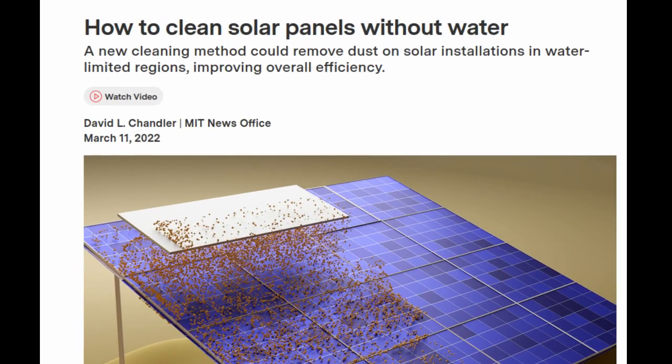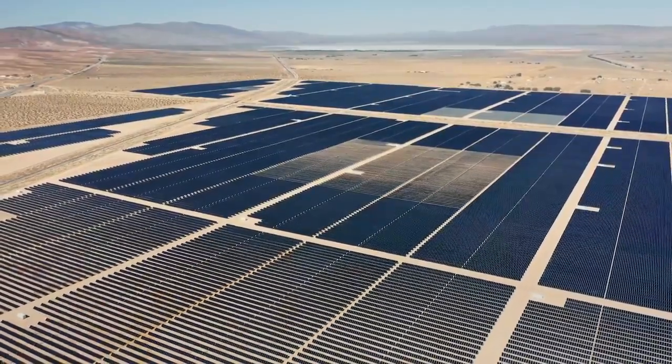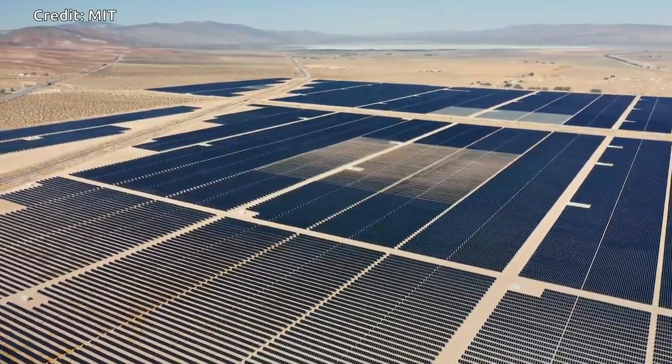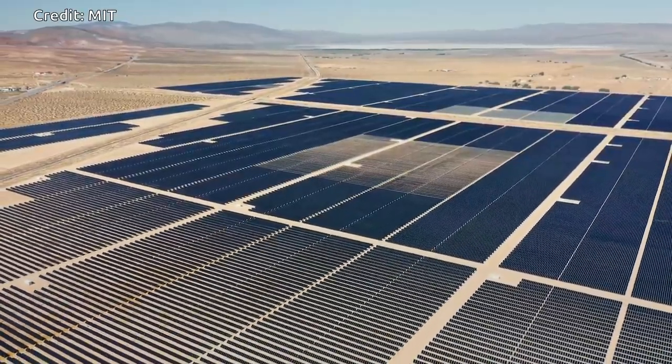Solar power is expected to reach 10% of global power generation by the year 2030, and much of that is likely to be located in desert areas where sunlight is abundant.